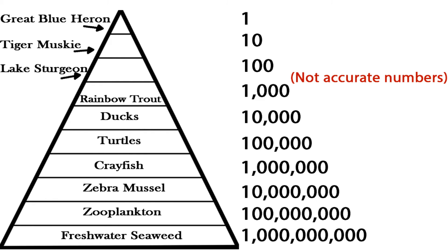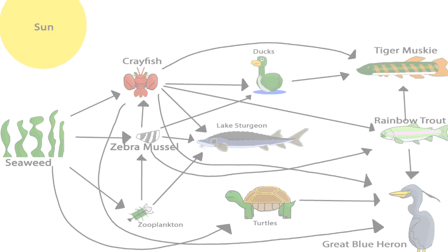If you didn't notice, every time you go up a level, 10% of the energy is transferred from the last trophic level. This is called the 10% rule.